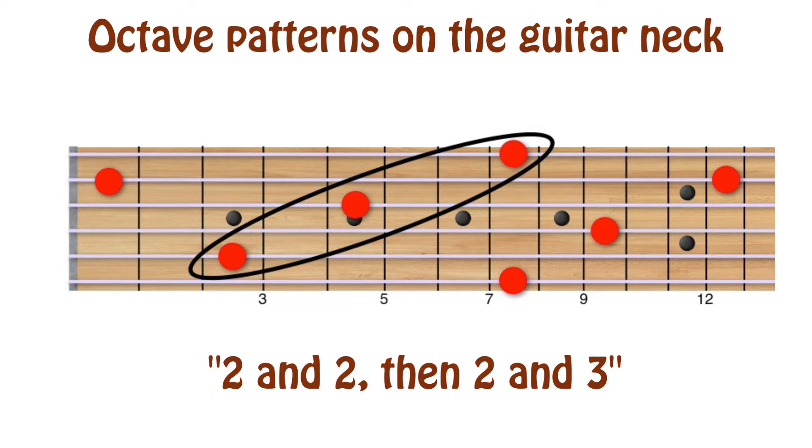Sidebar: The reason for the difference in the diagonal arrangement of octaves—two and two, then two and three—is due to the deviation in tuning between the second and third strings, which is a half step less than the tuning between all the other strings. Sounds arbitrary, yeah, but it's this one little deviance in the tuning of the guitar that makes the instrument so accessible, easy to play and navigate. Took me years to figure that out.